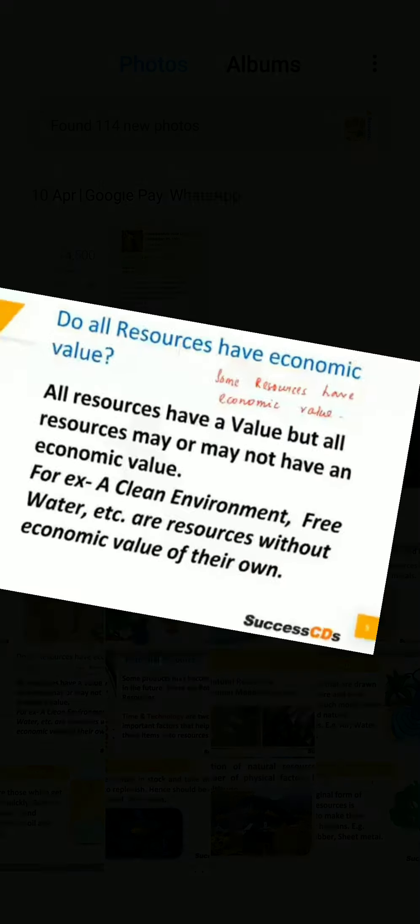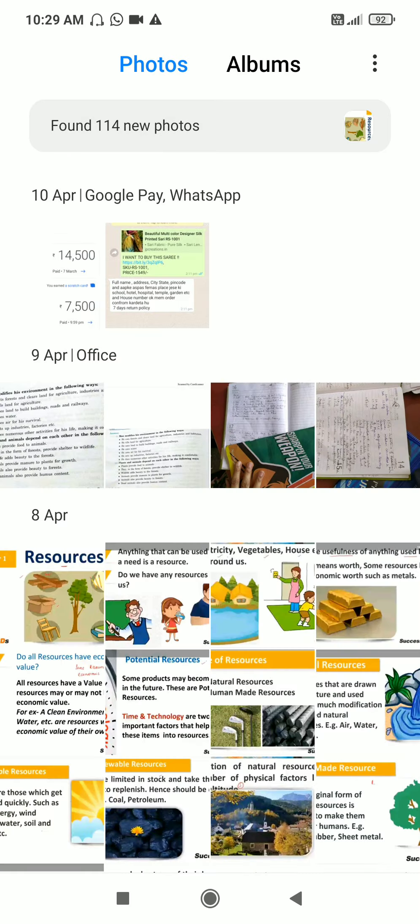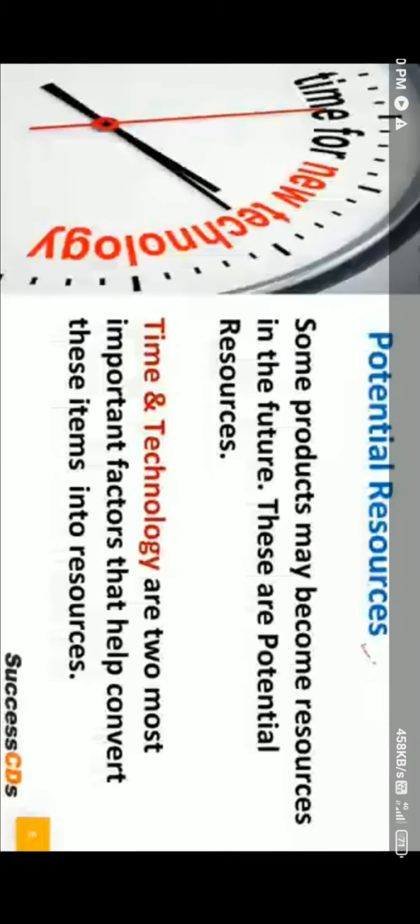Now, time and technology are two important factors that are changing substances into resources. People are the most important resource, because according to their needs, people use their ideas, knowledge, inventions, and technologies to discover something new. Due to this process of invention, development takes place in society. For example, technology to create hydroelectricity has turned fast-flowing water into an important resource.